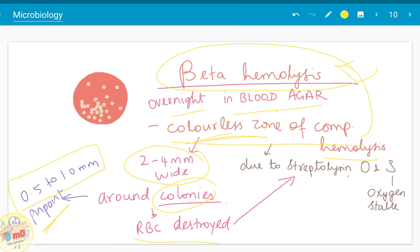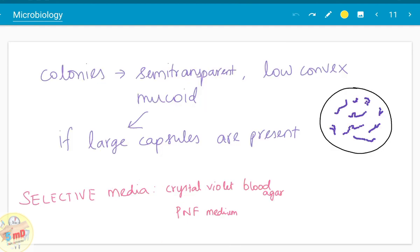This happens because of the streptolysin O and S. O stands for oxygen labile strain and S stands for oxygen stable hemolytic streptolysin. We should also remember the other features of the colonies. The colony is semi-transparent, it is low-convex, and if large capsules are present, the mucoid nature of the colonies can be appreciated. The selective media used include crystal violet blood agar and PNF medium.